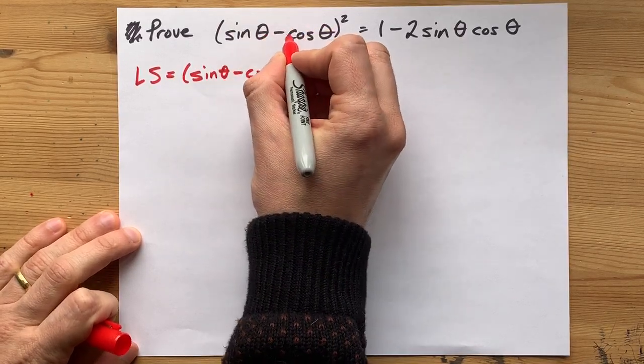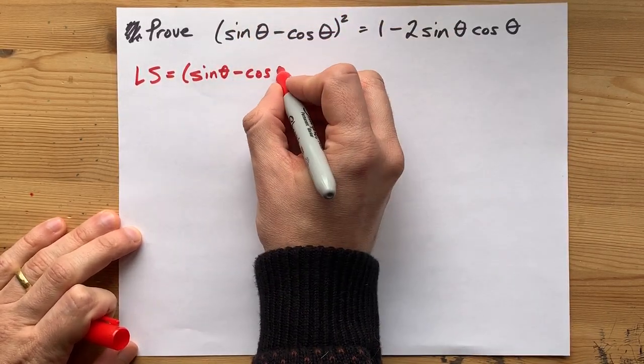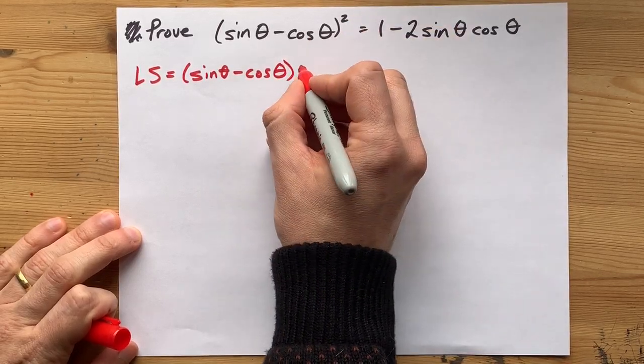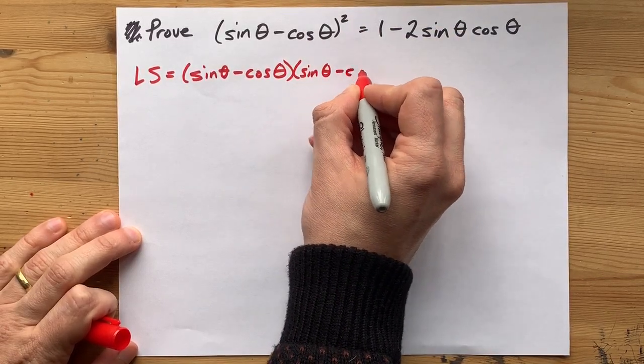You have sine theta minus cos theta all squared. What does it mean to square something? Well it means you multiply it by itself.